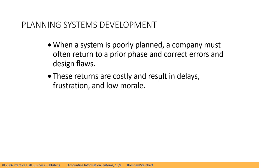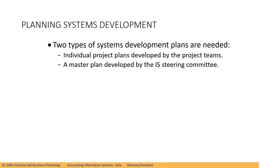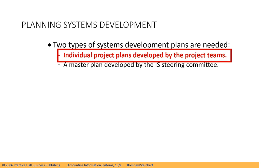When a system is poorly planned, a company must often return to a prior phase and correct errors and design flaws. Those returns are costly and result in delays, frustrations, and low morale. There are two types of system development plans which are needed: individual project plans, which are developed by the project teams, and the master plan, which is developed by the Information Systems Steering Committee. Let's go to the individual project plan.